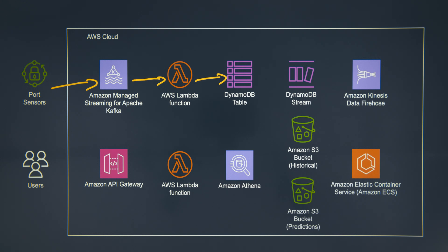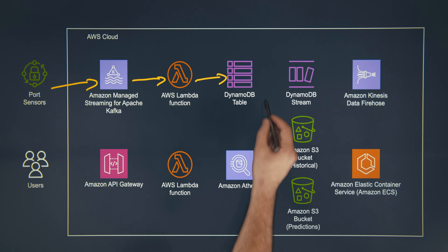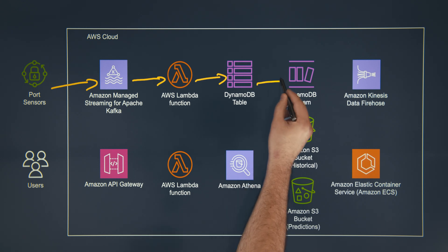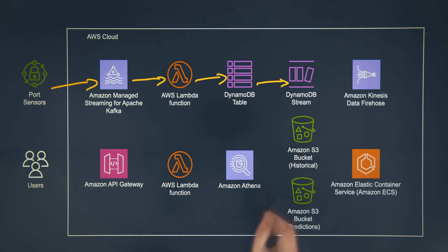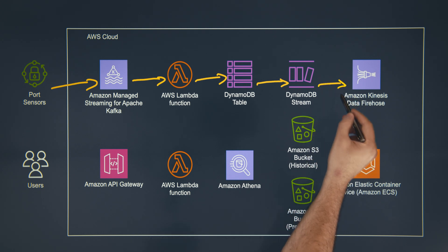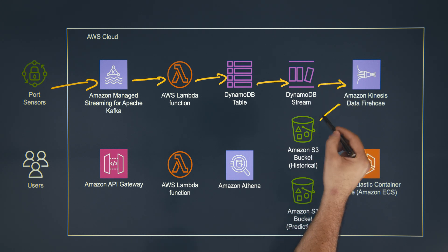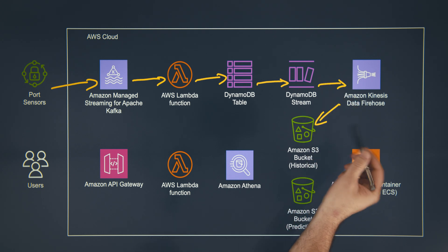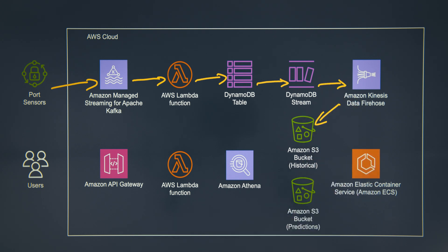From there, DynamoDB would utilize streams and streams would send it to Firehose. And then in parquet format, store the messages into a bucket for historical reasons. So you mentioned about DynamoDB as the hot storage — are you archiving the data out of it?